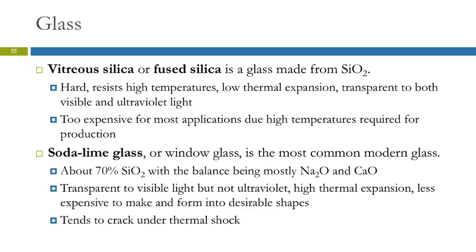What we commonly call window glass is soda lime glass, which has about 70% silica with the rest being mostly sodium oxide and calcium oxide. It's transparent to visible light but not ultraviolet light — which can actually protect you from sunburn.